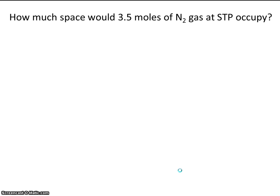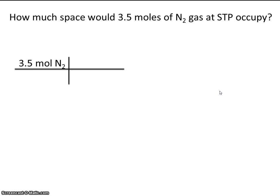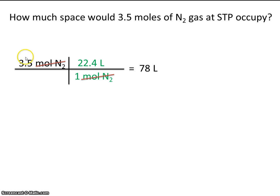Let's practice a simple conversion. How much space would 3.5 moles of nitrogen gas at STP occupy? Start with your given, and use a conversion factor: you know that 1 mole of nitrogen takes up 22.4 liters. So if 1 mole takes up 22.4 liters, 3.5 moles should take up 3.5 times that. Notice 2 sig figs in 3.5 and 3 sig figs in 22.4, leaving us with 2 sig figs in the answer. So, 3.5 moles of nitrogen gas would take up 78 liters of space.